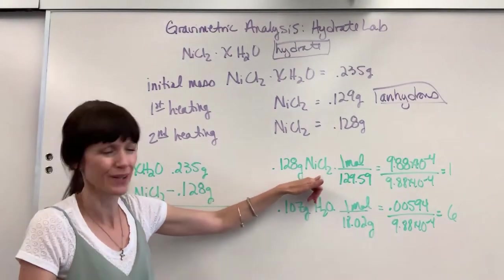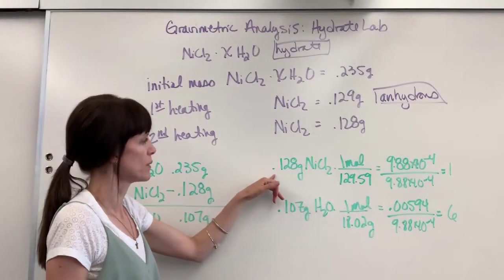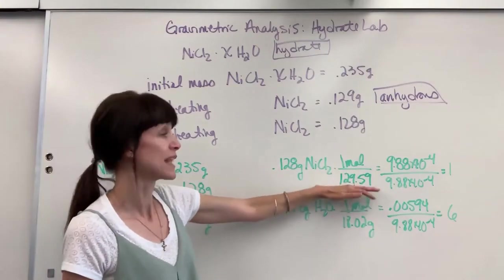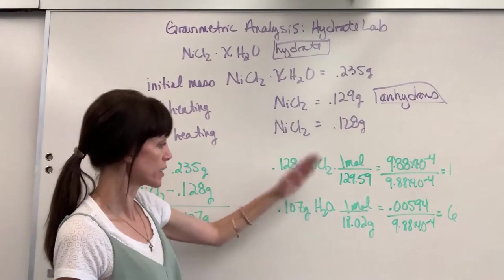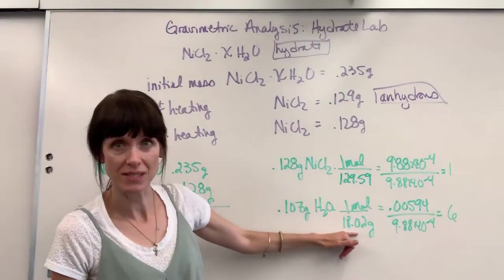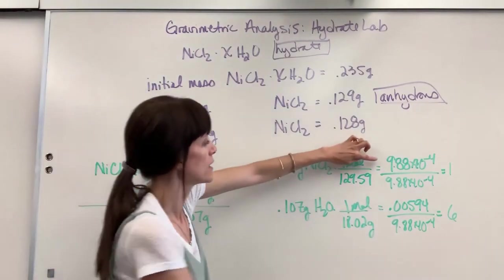So 0.128 grams, bring that to moles. That's the molar mass of nickel chloride. 0.107 grams of water, bring that to moles. The molar mass is 18.02. And here we get the moles.